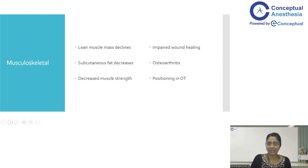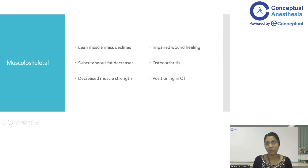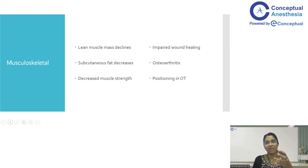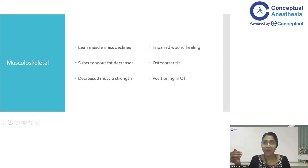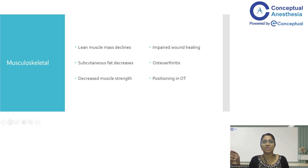Coming to the changes in the musculoskeletal system, the lean body mass will decline over time and subcutaneous fat will also decrease. When giving an IV cannula, it will slip because there is no fat to hold the intravenous line in place. There is decreased muscle strength leading to increased frequency of falls, and impaired wound healing due to impairment in cutaneous blood supply. This can be managed in the perioperative period by ensuring normothermia, good oxygenation, and normovolemia.